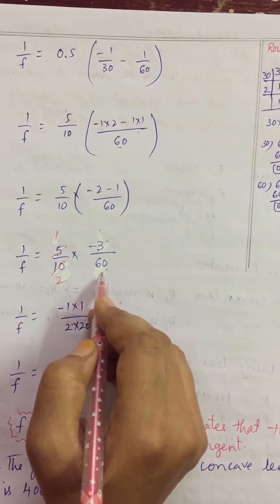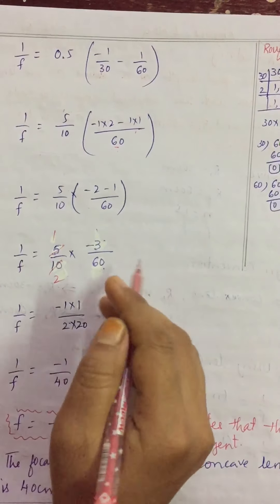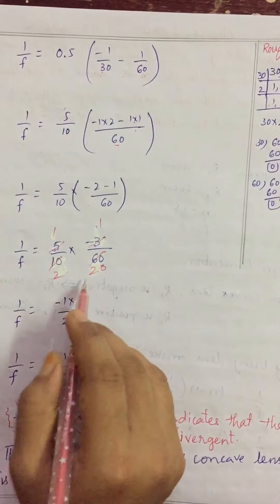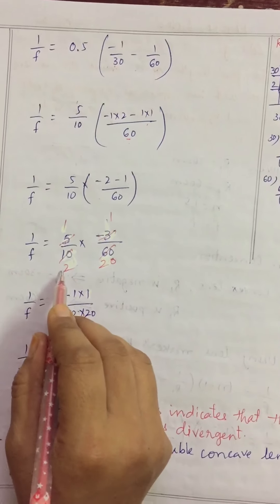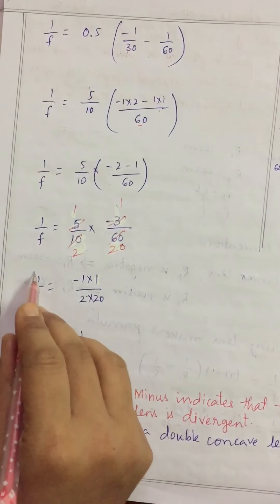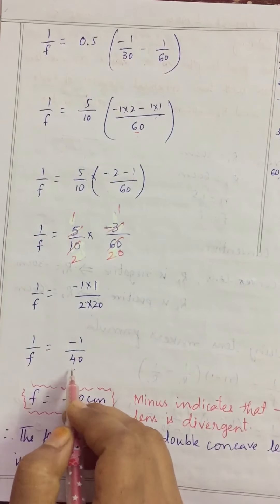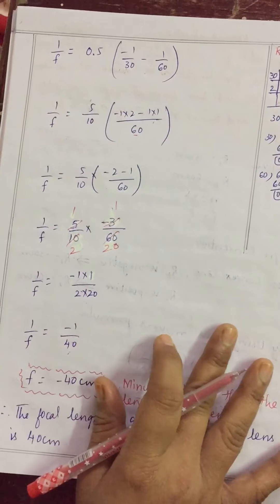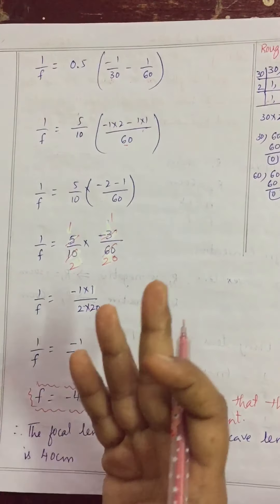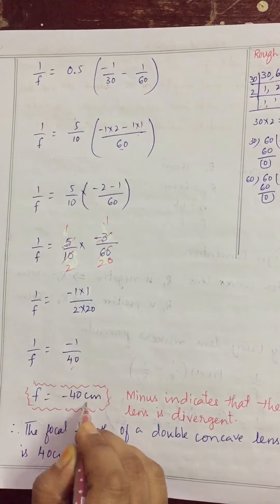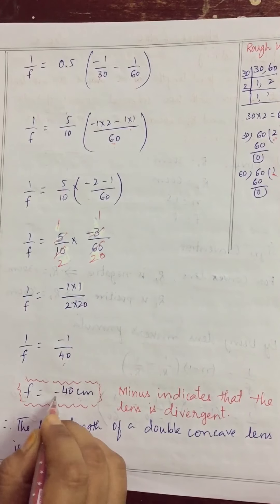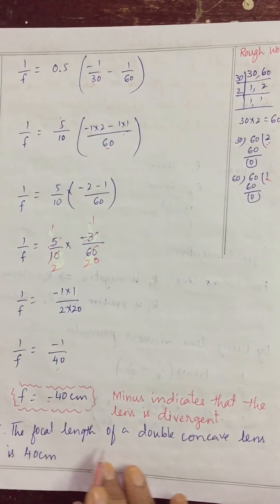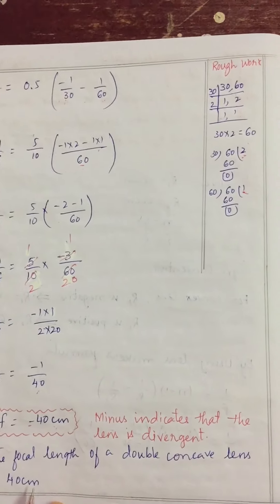Multiplying: (5 × -3) / (10 × 60) = -15/600 = -1/40. So 1/f = -1/40. Taking the reciprocal, f = -40 cm. The negative sign indicates that the lens is divergent, which means it is a concave lens. The focal length of the double concave lens is 40 cm (negative).